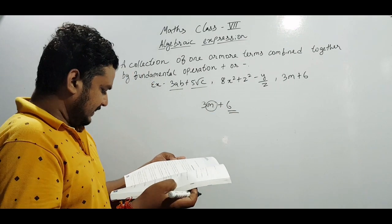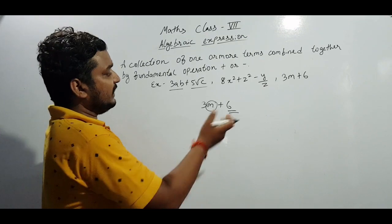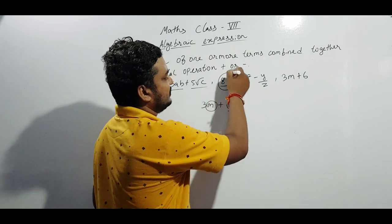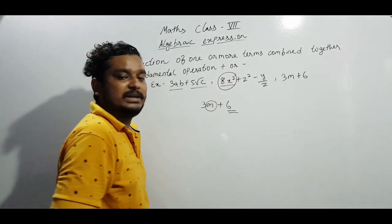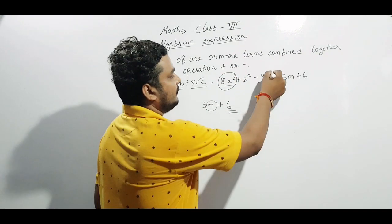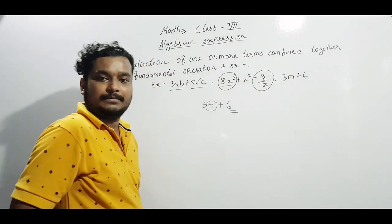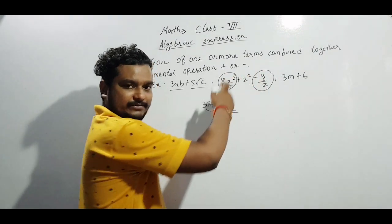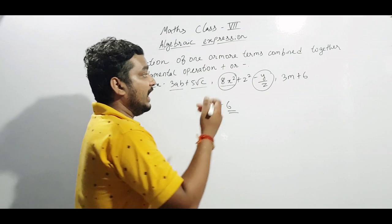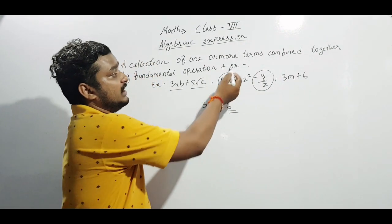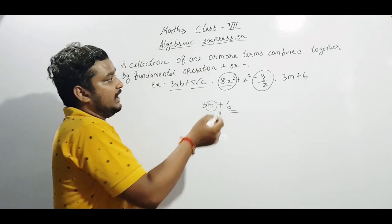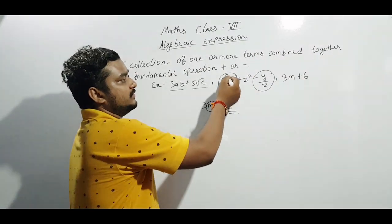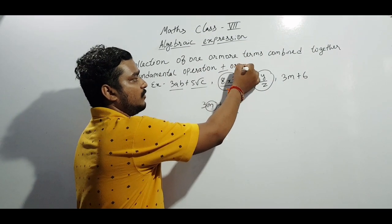The second concept is that of a term. Terms are individual combined things in the form of multiplication or division. One term, second term, third term — we can have different terms. Two or more terms joined by the fundamental operation plus or minus is called an algebraic expression.